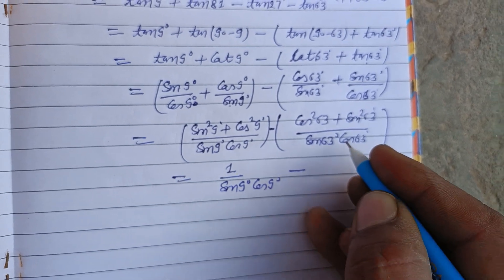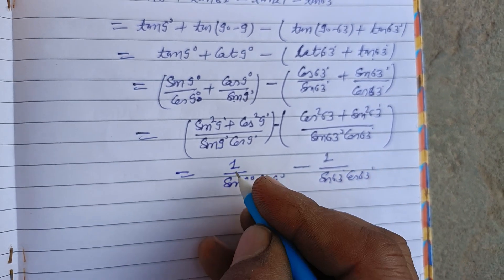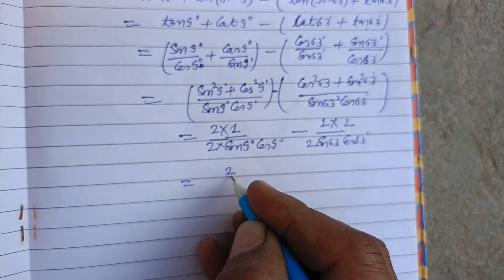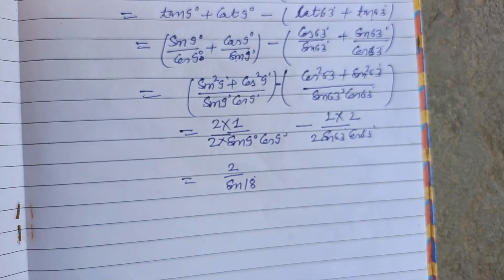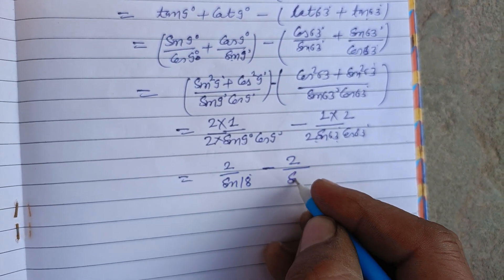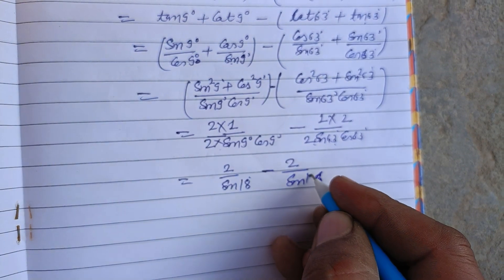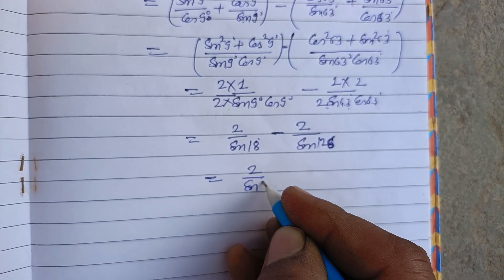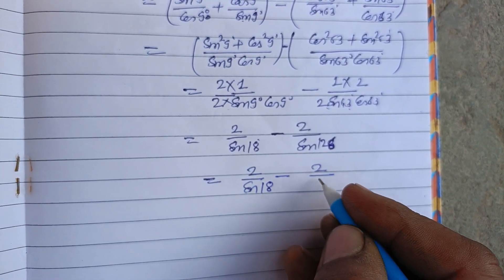The numerator sin²9° plus cos²9° equals 1, so we have 1 over sin9°cos9° minus 1 over sin63°cos63°. Multiplying numerator and denominator by 2 and applying the identity 2sinAcosA = sin2A, this becomes 2/sin18° minus 2/sin126°.